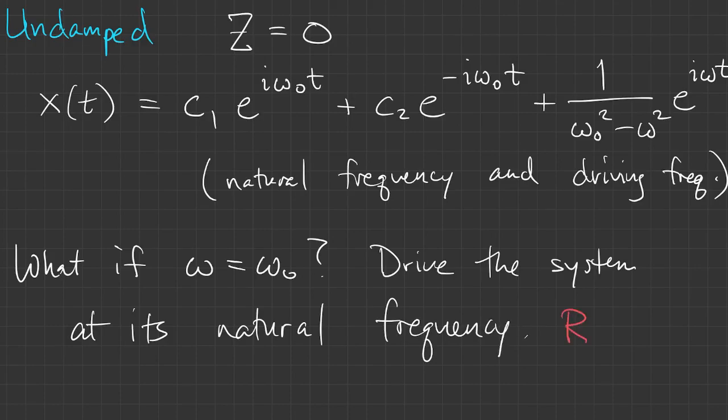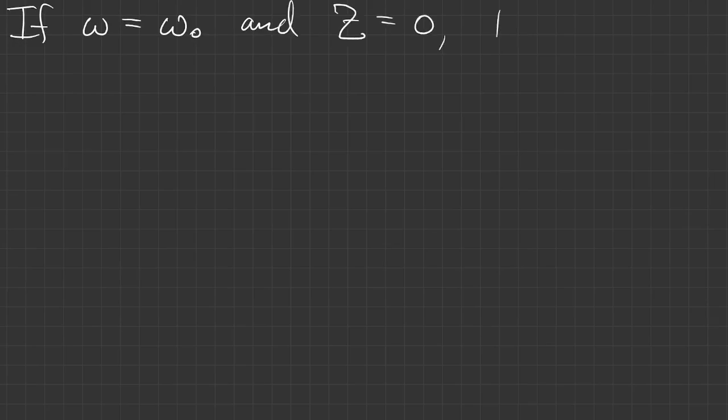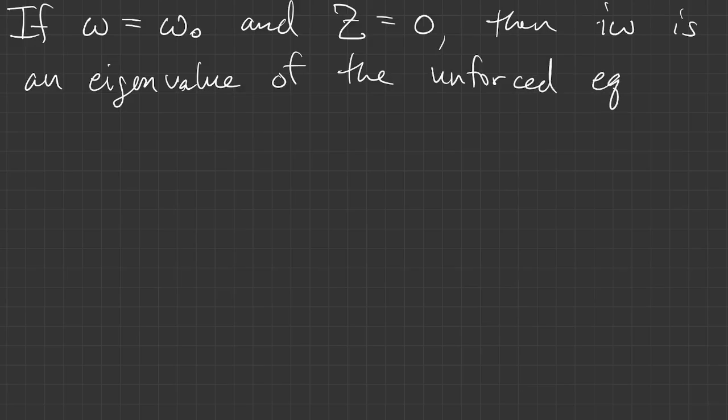This is a situation called resonance, and it's extremely important in physics. Mathematically, if omega equals omega nought and there's no damping, then i omega is actually an eigenvalue of the homogeneous problem. So this is again where that undetermined coefficients fails. But we can fix it the way that we did in an example before.